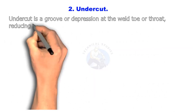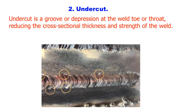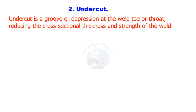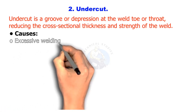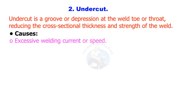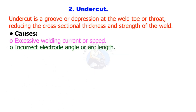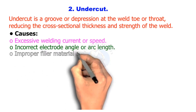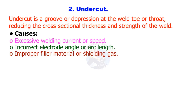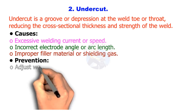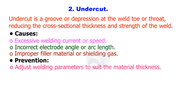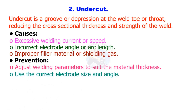Undercut is a groove or depression at the weld toe or throat, reducing the cross-sectional thickness and strength of the weld. Causes include excessive welding current or speed, incorrect electrode angle or arc length, and improper filler material or shielding gas. Prevention: adjust welding parameters to suit the material thickness, use the correct electrode size and angle, and ensure proper shielding gas coverage.